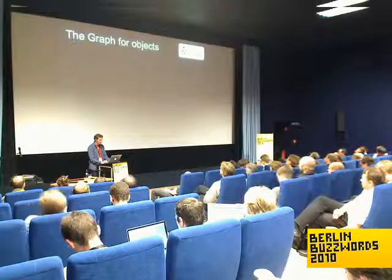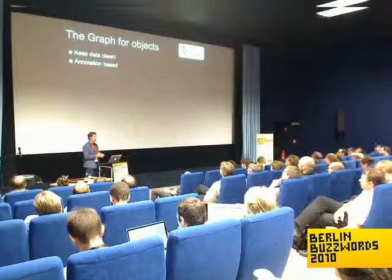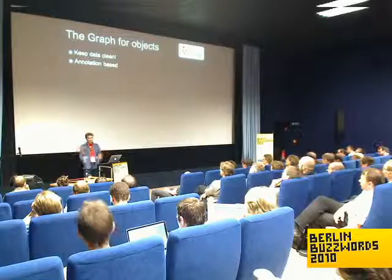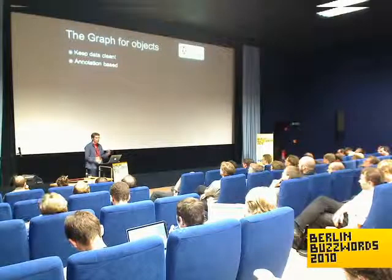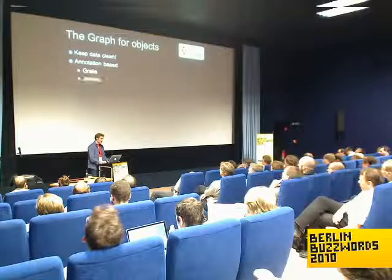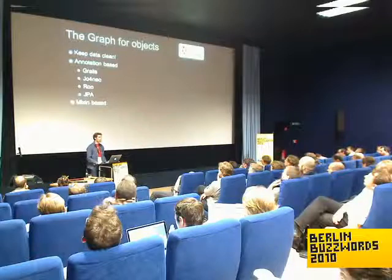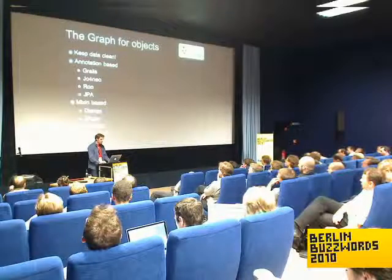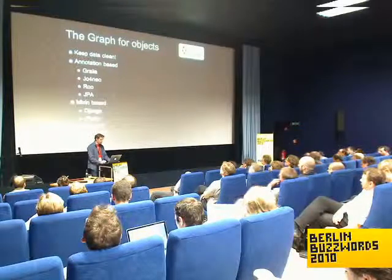For the graph for objects, the goal is to keep the domain data clean in the graph, not to introduce too much overhead, so you can do your domain queries. There are two approaches. One is annotation-based, which is very Java- and Ruby-centric — you annotate the objects like in JPA or something. That's the case in Grails, Joe Forneo, Roo, and JPA. Then you have a mixin-based approach, typical for scripting languages like Django and JRuby. And then you have the REST clients.